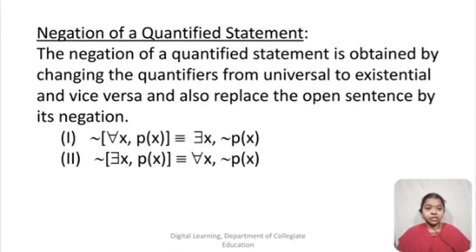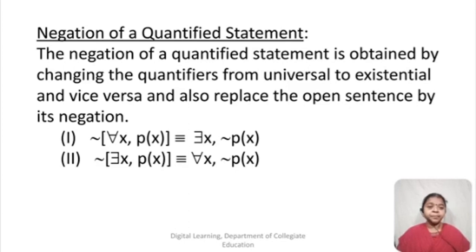Now let's see the negation of a quantified statement. The negation is obtained by changing the quantifier from universal to existential and vice versa. Wherever we have 'for all', its negation becomes 'there exists', and wherever we have 'there exists', its negation becomes 'for all'. Also, replace the open sentence by its negation: negation of ∀x, p(x) is ∃x, ¬p(x); and negation of ∃x, p(x) is ∀x, ¬p(x).